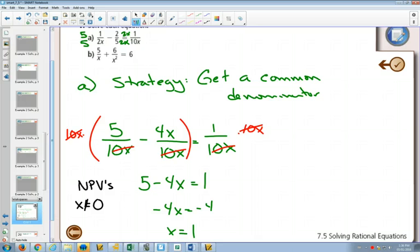So because our answer is x equals 1, that's fine. You don't have to plug it in. You can plug it in if you'd like to check it. But if you just check your non-permissible values to see if it's different, then you'll be fine. So this is using the strategy of getting a common denominator.